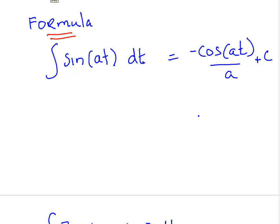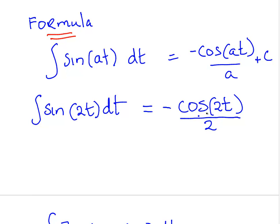So sine of at dt, so we have at and the sine of that. What we do here is we integrate the sine as usual, so minus cos at. But because we are dealing with at here rather than just t, what we do is divide by a. So sine of 2t dt, that is equal to minus cos of 2t, but we are dividing by 2 because of that coefficient there. Put in the plus C always.